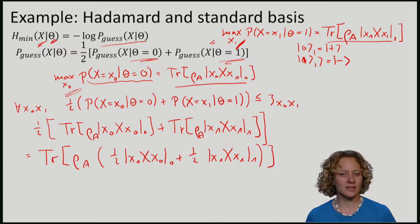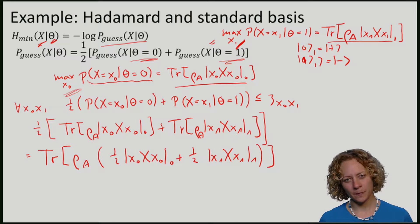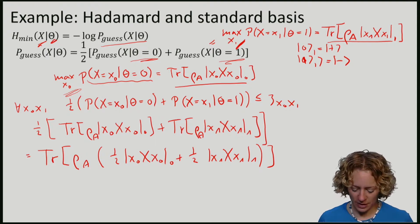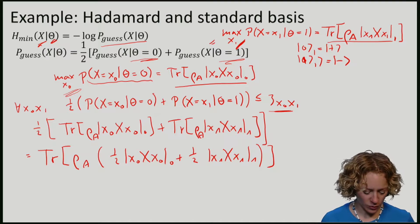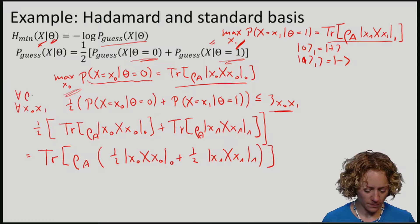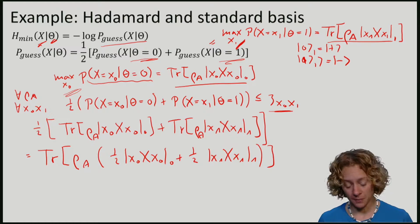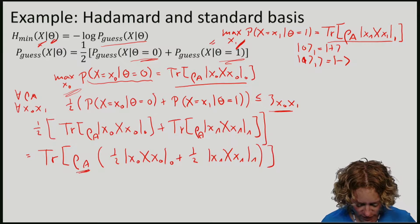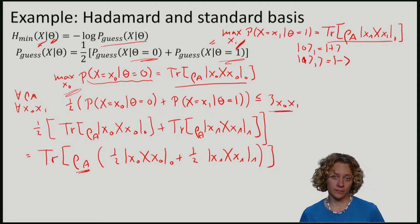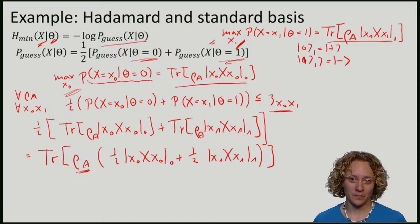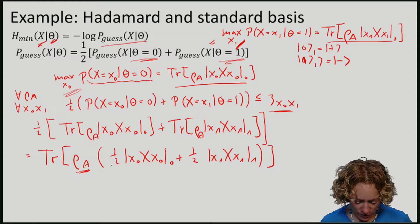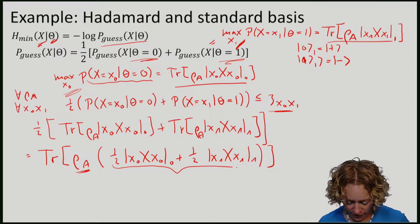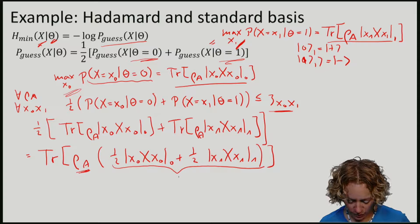So of course, Eve might be very smart. So to compute the ultimate bounds on this, which would hold for any state rho A that Eve might have prepared, we want to maximize this expression over states rho A. Now note that this is just an eigenvalue problem. What we want to know is we want to find the largest eigenvalue of this operator, which I will call M.